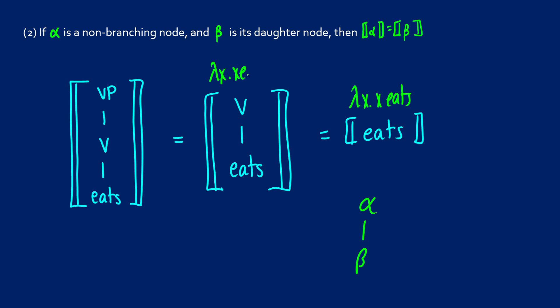So therefore if we know that the meaning of eats is lambda x dot x eats, then we know that the meaning of the verb is going to be lambda x dot x eats and the meaning of the verb phrase in this case is going to be lambda x dot x eats. So this will be how any non-branching node will work. So just a straight line down.